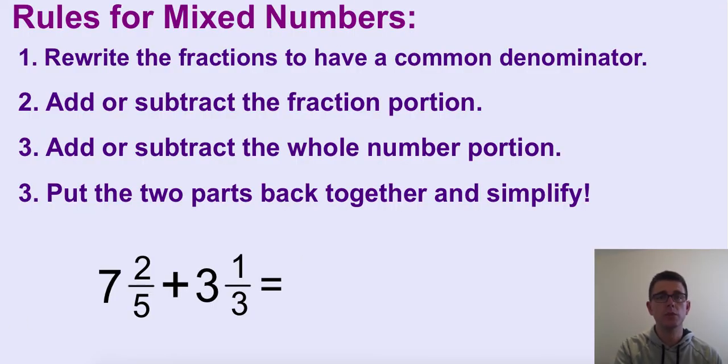So let's do mixed numbers. For a mixed number, you're going to rewrite the fractions with a common denominator, then add or subtract the fraction portion, then add or subtract the whole number part, and then put the two parts back together. Make sure you get those four steps into your notes.